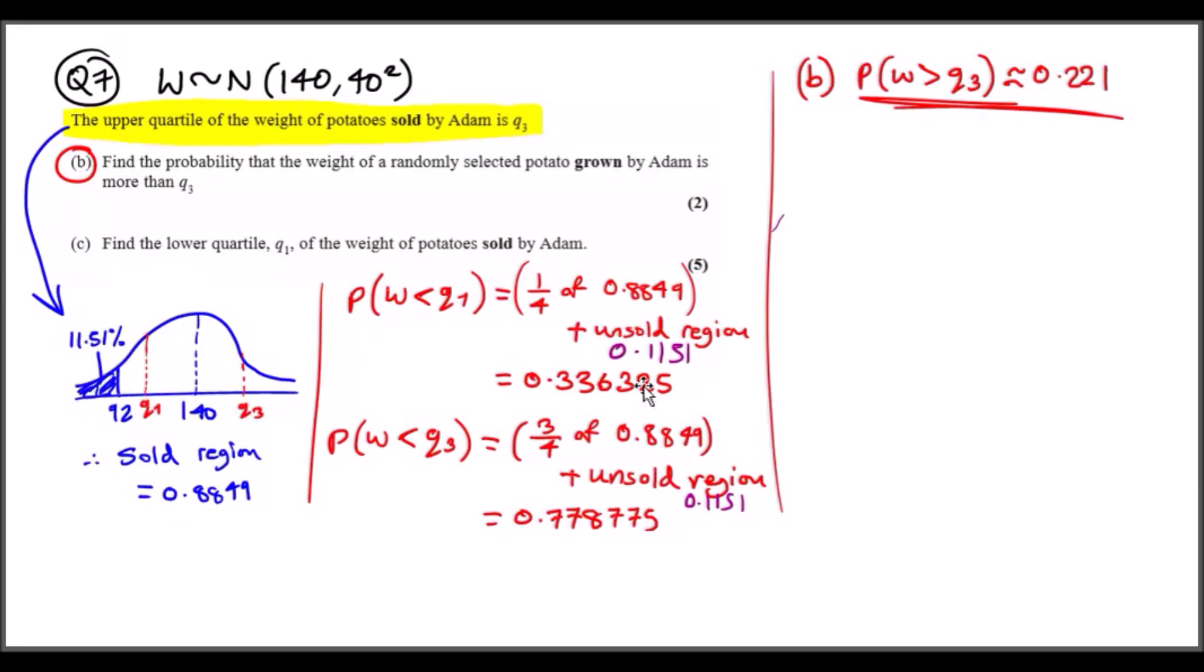Now to actually solve the probability, they want to find the weight that is more than Q3. First, the less than Q3 we found was 0.778. To get the right hand side, just one minus that region, and you should get 0.221. That's easy.